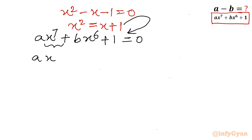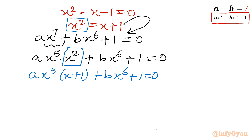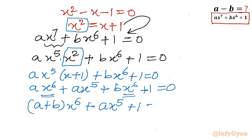x to the power 7 can be written as x to the power 5 times x squared, using the exponent property 5 plus 2 equals 7. So the expression becomes ax to the power 5 times x squared plus bx to the power 6 plus 1 equal to 0. Now I will replace x squared with x plus 1, giving ax to the power 5 times (x plus 1) plus bx to the power 6 plus 1 equal to 0.